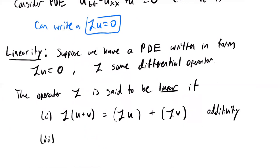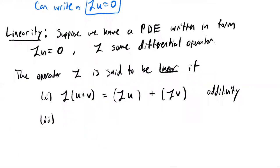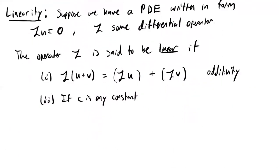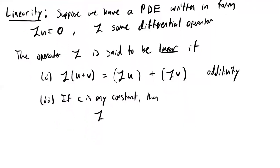The second condition concerns scalar multiplication. If C is any constant, then L applied to C times U — where U is a function and C doesn't depend on any of the variables — must equal C times L of U. We say the operator L is linear if both of these conditions are satisfied.